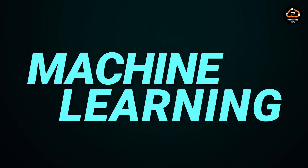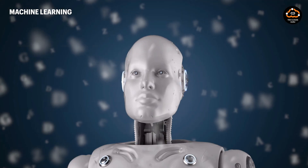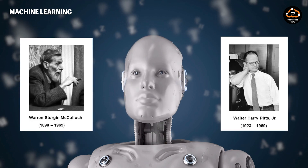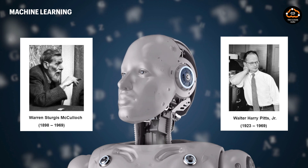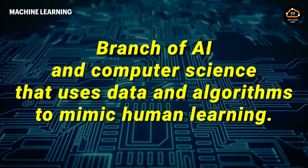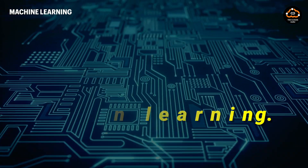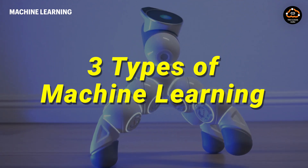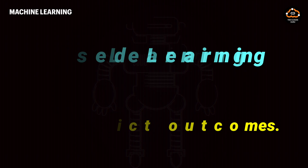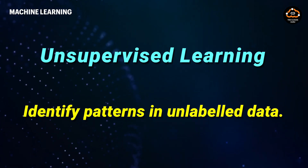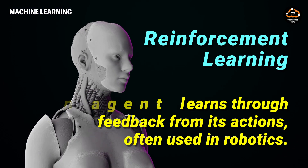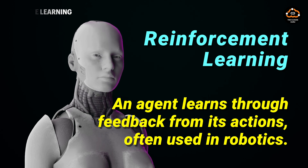Next, let's talk about machine learning. Machine learning, or ML, has its roots in the 1943 work of neuroscientist Warren McCulloch and logician Walter Pitts, who sought to map human decision-making processes mathematically. ML is a branch of AI and computer science that uses data and algorithms to mimic human learning, gradually improving the system's accuracy. There are three types: supervised learning, where machines are trained using labeled data to predict outcomes; unsupervised learning, where machines identify patterns in unlabeled data; and reinforcement learning, where an agent learns through feedback from its actions, often used in robotics.